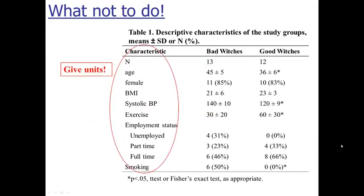Always give units in tables. It's easy to forget when you're cranking things out in a statistical analysis program. Age — well, if you look at 45 and 36, you'd guess years, but it could be months. And if you get down to exercise with values of 30 and 60, is that 30 minutes a day, 30 minutes a week, 60 hours a year? There's no way to tell without the units. Make sure you're always very specific so it's easy to tell what you're referring to.